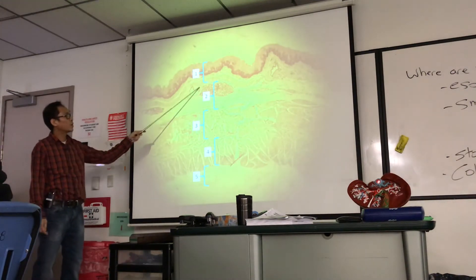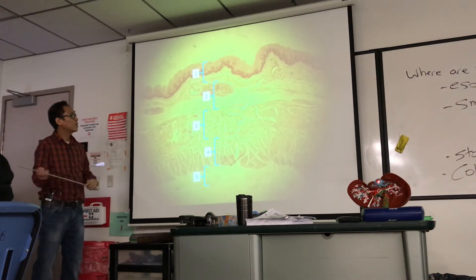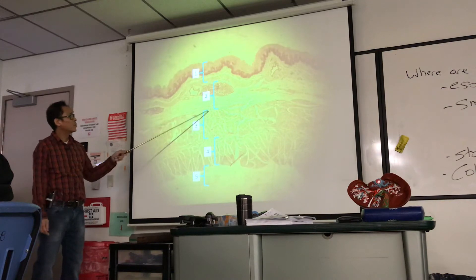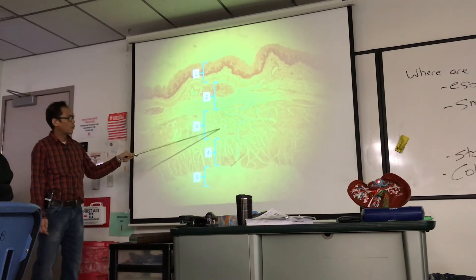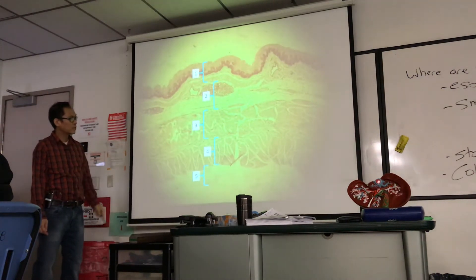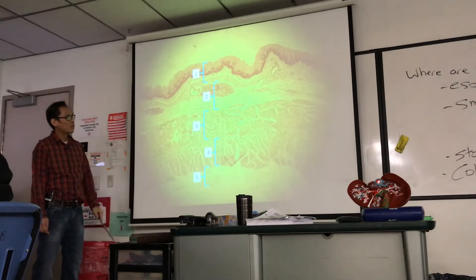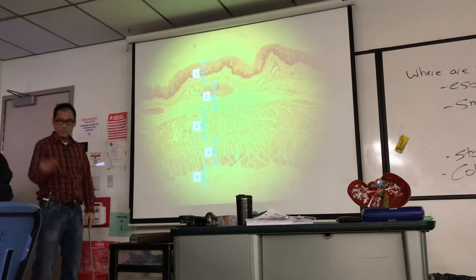Number one, from here to here: mucosa. Number two: submucosa. Number three: circular layer of muscularis externa. Number four: the longitudinal layer of muscularis externa. Number five: serosa/adventitia.